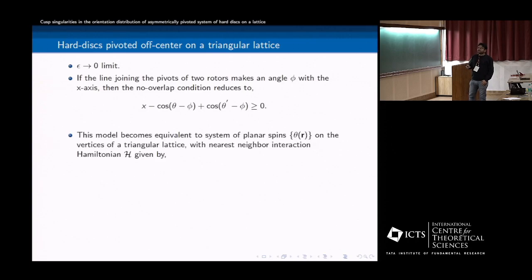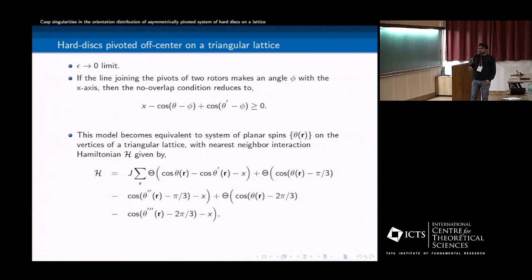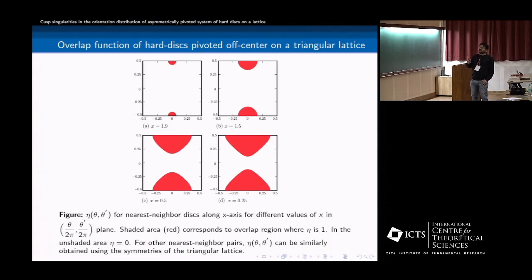So when we take this limit, the hardcore constraint actually, to first order of magnitude or in epsilon, there is no epsilon. So the correction will be quadratic order, we ignore that. And the hardcore constraint actually reduces to this. And this model actually becomes equivalent to a system of planar spins, whose Hamiltonian can be written like this, where J tends to infinity, and this is XY model. And where these are the neighbors. So here also you can write the overlap function. And it's all known.